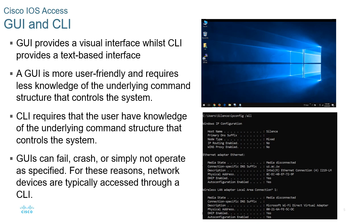The GUI is a more user-friendly interface and requires less understanding of the underlying command structure. The CLI requires the user to have knowledge of that command structure. The GUI can fail, crash, or not operate as specified — that is why network devices are typically accessed through the CLI. Generally, the GUI is preferred by novice users, while the CLI is preferred by advanced users and system administrators, as it offers greater control over the system.